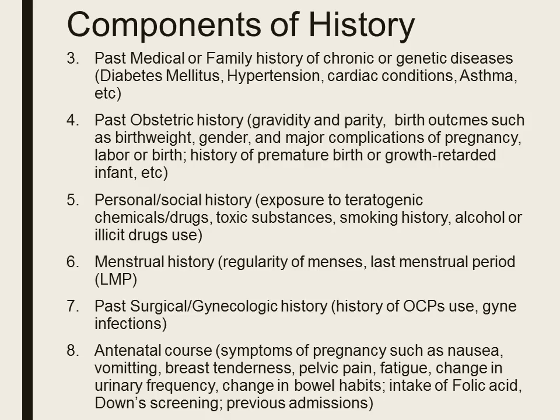Update the personal and social history of the patient, such as exposure to teratogenic chemicals or drugs, toxic substances, her smoking history, alcohol, or illicit drug use. Ask about her menstrual history, the regularity of menses, and the last menstrual period, because that is where you will base the fetal age. Obtain past surgical and gynecologic histories such as her history of OCPs and gynecologic infections. Lastly, ask about the antenatal course and symptoms of pregnancy she is experiencing, like nausea, vomiting, breast tenderness, and pelvic pain.